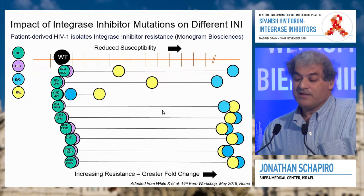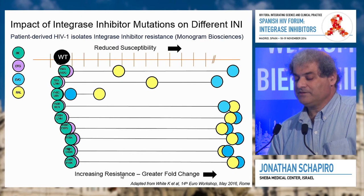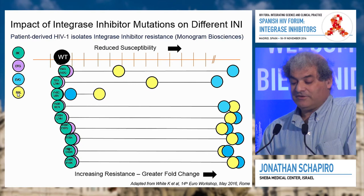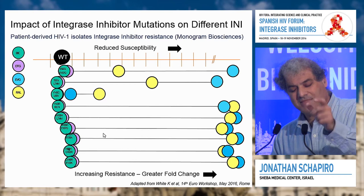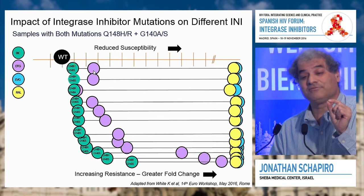Looking at reduced susceptibility another way — the further right, the more resistance — raltegravir is yellow, elvitegravir is blue, bictegravir is green, and dolutegravir is purple. Bictegravir and dolutegravir show much less resistance than the first-generation drugs. When tested against the most nasty mutations, all four drugs showed substantial resistance, with small differences between the second-generation pair. These differences are very small, and it will be interesting to see if they have any clinical significance.